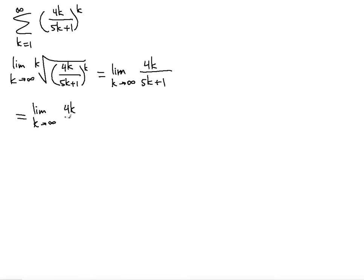We're going to multiply the numerator and the denominator by the highest power, by 1 over k. That is, by 1 over k with the highest power, which is 1, k to the first power.